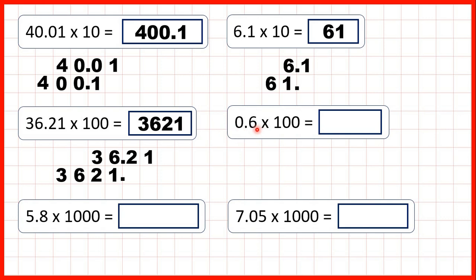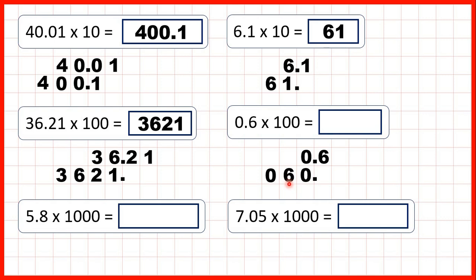Now we have 0.6, so we write the number out and copy down the decimal point, and we are multiplying by 100, which means digits will move 2 squares to the left. The way to remember this is that 100 has 2 zeros so digits move 2 squares, and when we multiply the number gets bigger so the digits are moving to the left, because to the left we have our larger place values. We can copy this 0 down 2 squares to the left and do the same with this 6. But now we have an empty square before the decimal point, and we know that the digit before the decimal point is the ones digit, so we need to write a 0 in this empty square to show that the 6 has now moved into the tens column. That gives us 060 with a decimal point on the end. When the decimal point is on the end we have a whole number, and we don't need the leading 0, so we can just write our answer as 60.